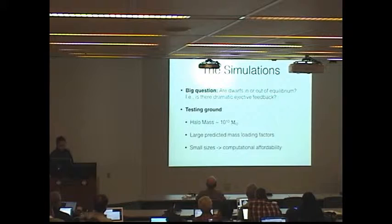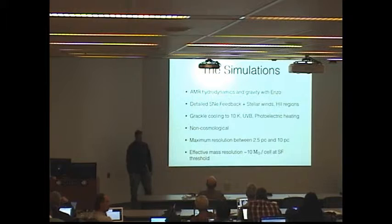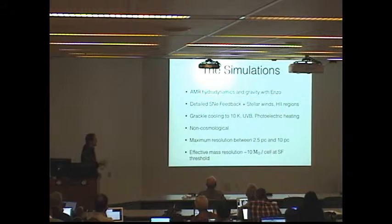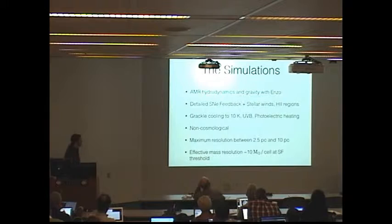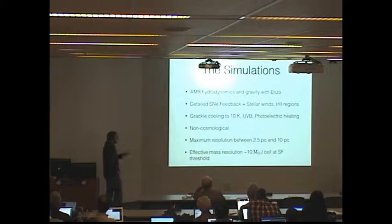The simulations that I'm going to be talking about are AMR with ENZO. I implemented a new supernova feedback recipe in this simulation. Basically, every time a star forms, we roll the dice and check how many supernovae are going to go off from that star particle. And they go off with a realistic delay time distribution. So we're resolving individual supernovae going off. And we have a crude prescription for H II regions.